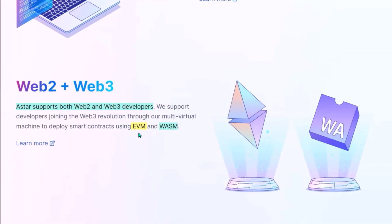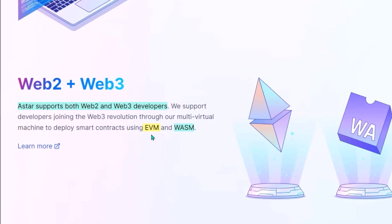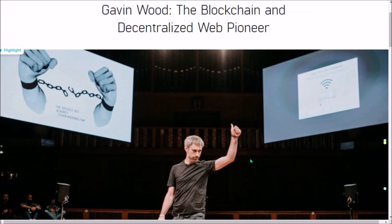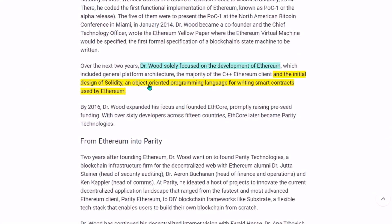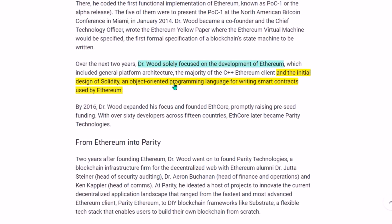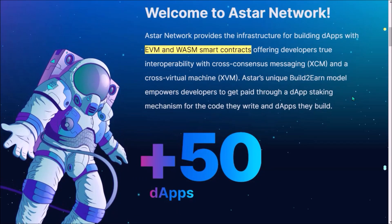So what does WASM going live on ASTAR actually mean? Up until now, ASTAR was supporting only EVM smart contracts. EVM smart contracts are written in the Solidity programming language and they are used by all DeFi applications on Ethereum. Gavin Wood proposed and designed much of this Solidity smart contract language when he worked on the development of Ethereum. So ASTAR is now becoming the very first parachain supporting both EVM and WASM.